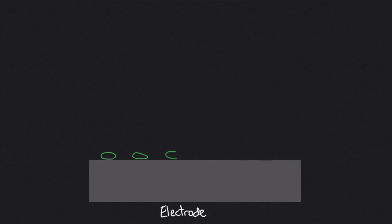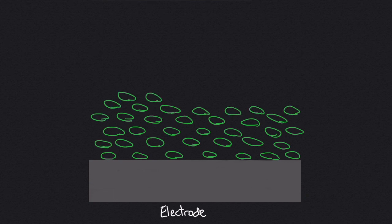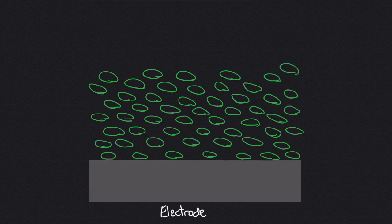We might expect that once the electrode is covered, no more electrogens can attach to the electrode. However, Geobacter sulfurreducens is able to attach itself to other Geobacter sulfurreducens cells which are attached to the electrode. This process continues until a thick layer of Geobacter sulfurreducens cells is formed on the surface of the electrode.